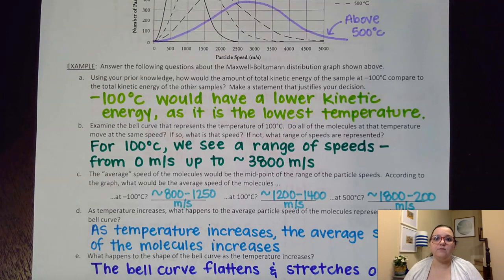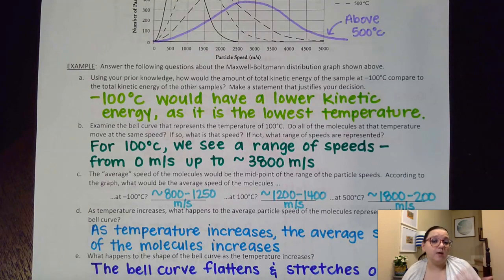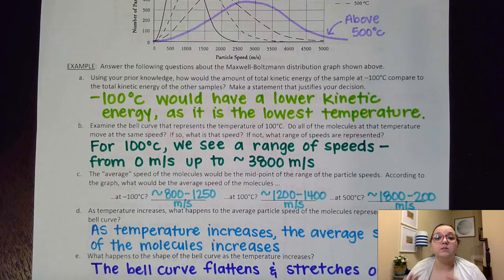So the first question asked how would the amount of total kinetic energy of the sample at negative 100 compare to the total kinetic energy of the other samples. And hopefully we recognize the fact that kinetic energy is directly proportional to temperature. As kinetic energy goes up the temperature goes up and so because negative 100 was the lowest of the temperatures it would have the lowest kinetic energy of the samples that they gave us.